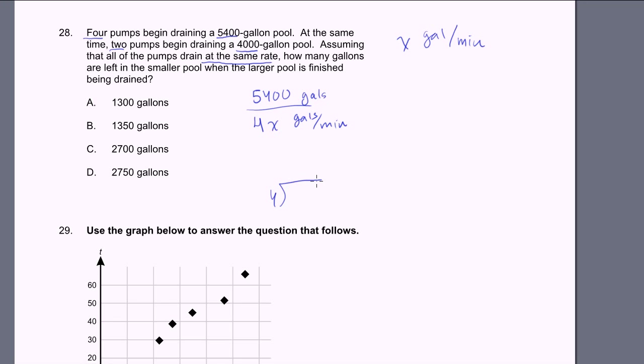It'll be 5,400 gallons divided by 4x gallons per minute. And what is this equal to? If we divide the numerator and the denominator, let's just divide by 4. 4 goes into 5,400... it goes 1,350 times. So this is equal to 1,350 over x minutes to drain the 5,400 gallon pool.